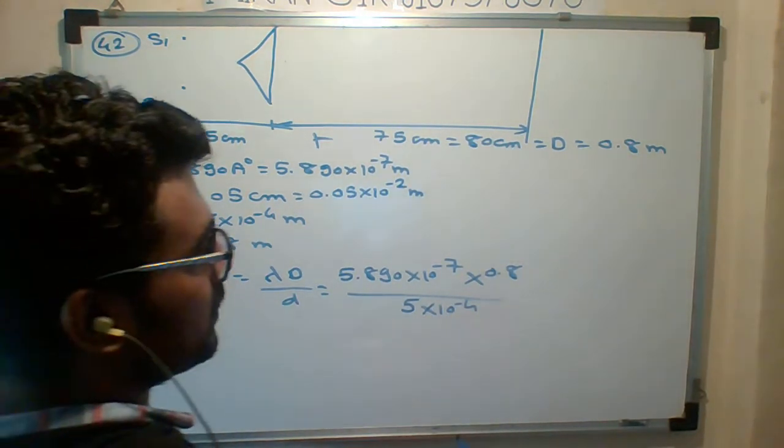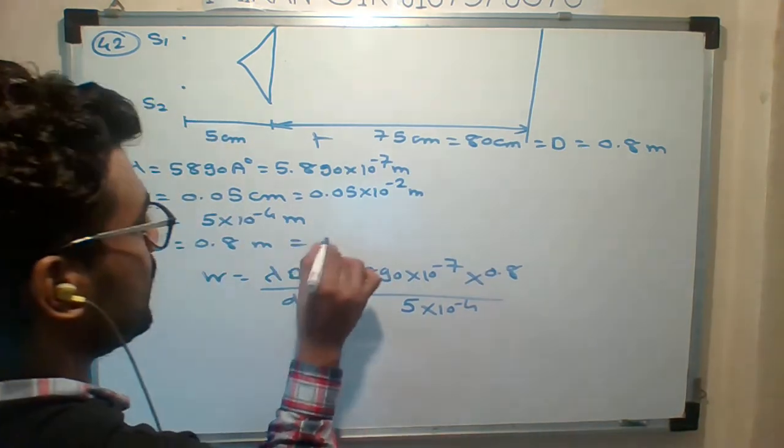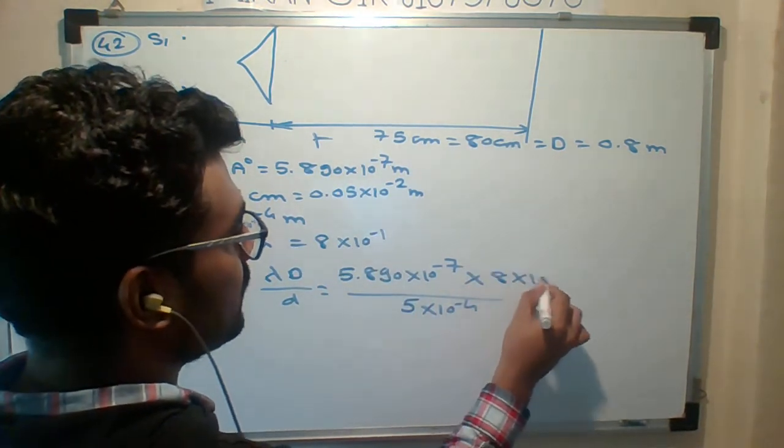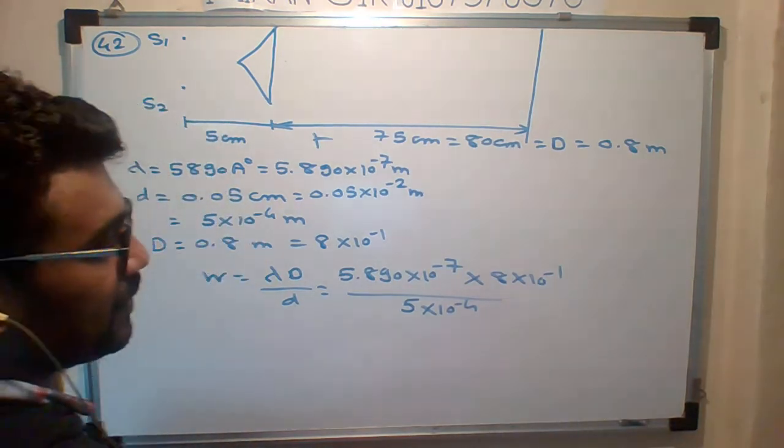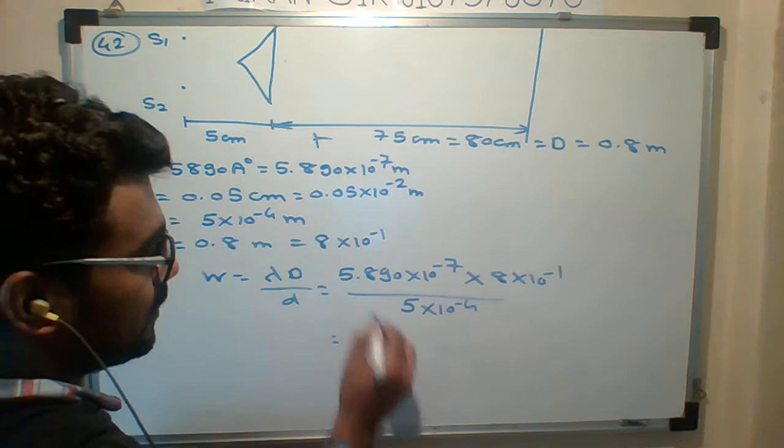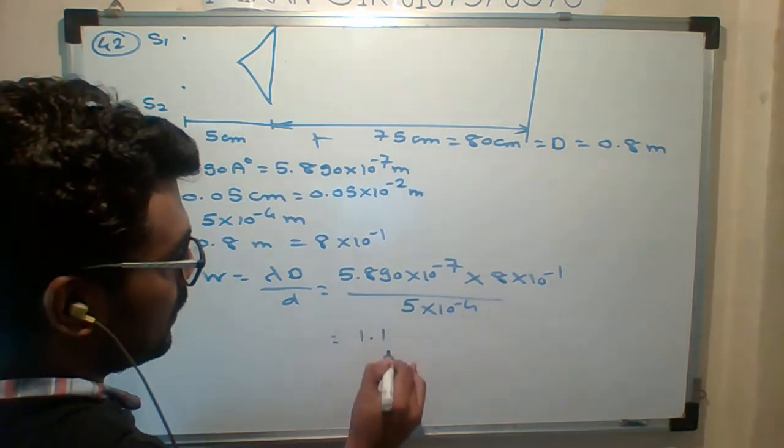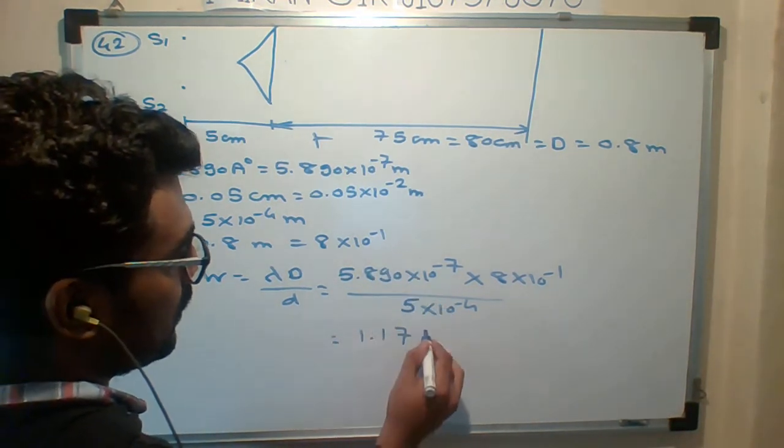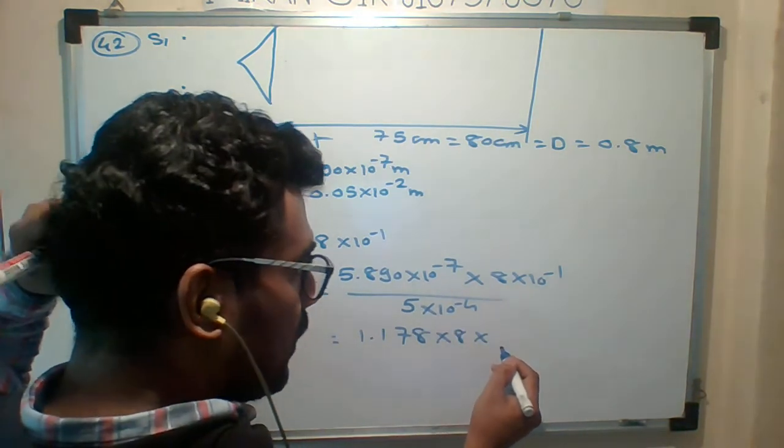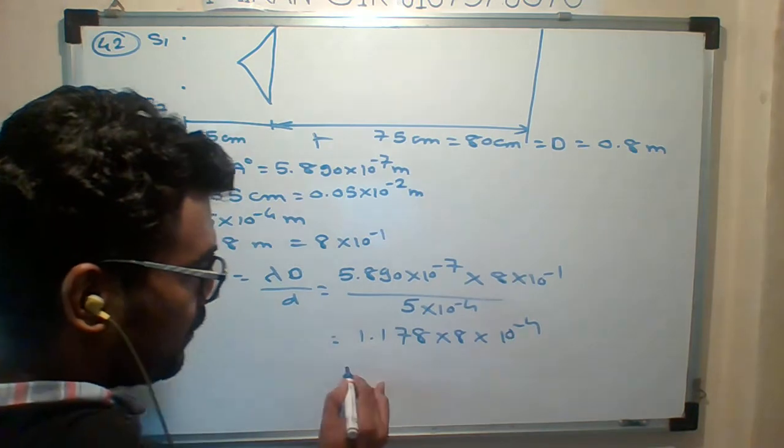So let us do the calculation. 0.8 we can write as 8 into 10 to the minus 1. So here I can simplify easily. Let me multiply. Minus 4 will come in the denominator. And let me divide. 5 into 5, 5 into 40 is 8. So that's multiplied: 4.8 into 10 to the minus 4.